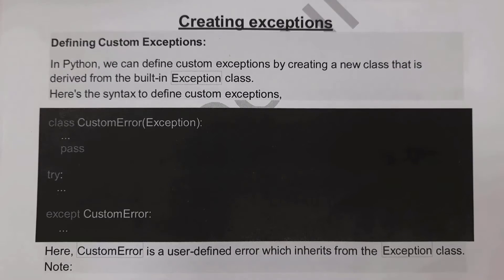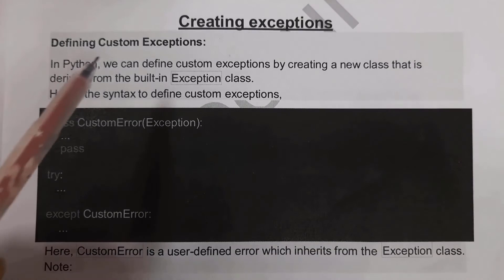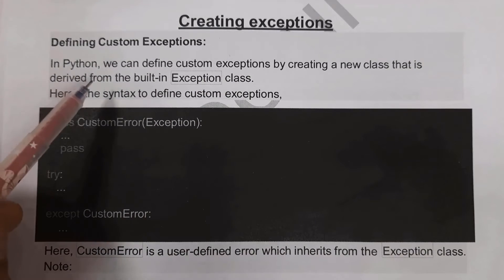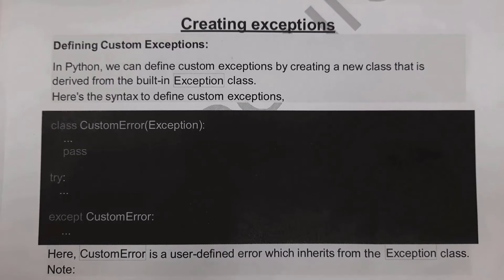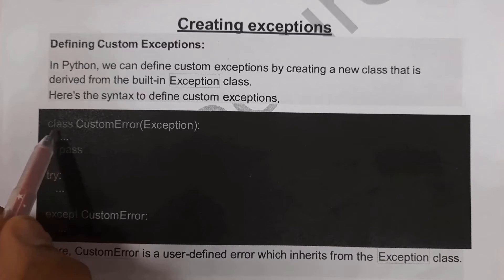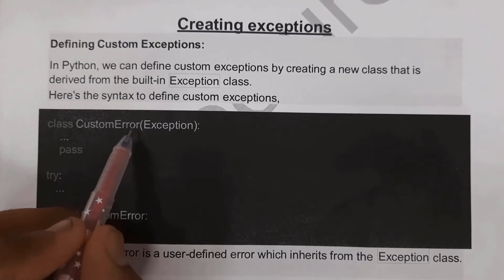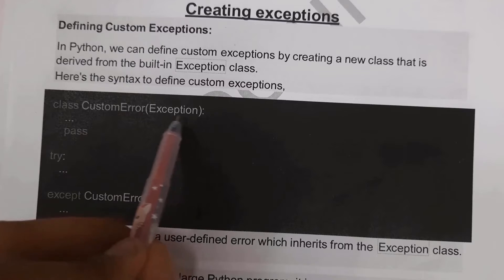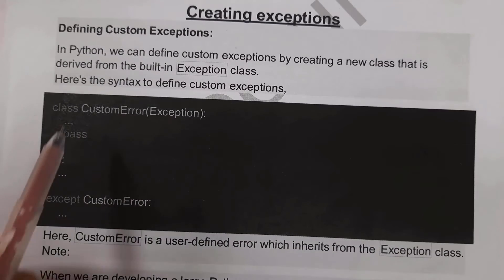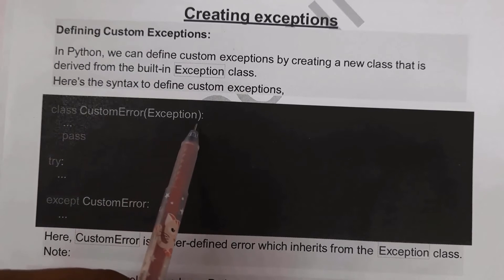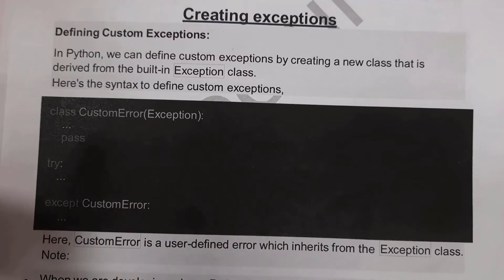Next I will explain how to create custom exceptions in Python. We can define our own exceptions by creating a new class derived from the built-in Exception class. The syntax is: class CustomError(Exception): pass. Then use a try and except block, and inside the except block provide the custom error name.